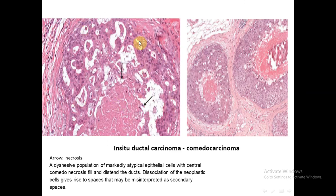This is in situ ductal carcinoma of comedocarcinoma type. We see here proliferation of high-grade malignant mammary epithelial cells with prominent features of malignancy: pleomorphic, hyperchromatic nuclei and high nuclear-to-cytoplasmic ratio. In the center, there is comedonecrosis — necrosis in the center of the lesion. Here we have the necrosis surrounded by high-grade malignant cells, with periductal fibrosis and chronic inflammation.